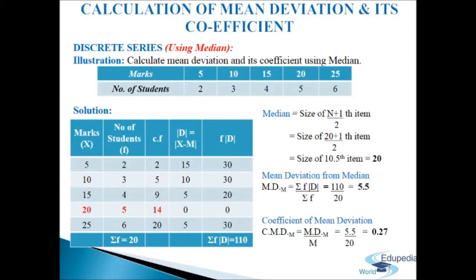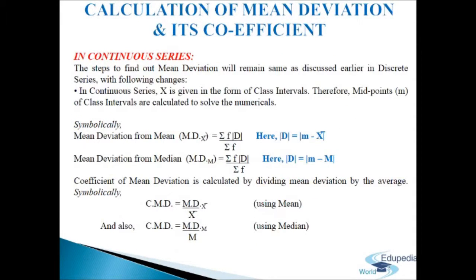This is how we calculate mean deviation and its coefficient in discrete series using median. Now we come to calculation of mean deviation and its coefficient in continuous series. The steps remain the same as discussed for discrete series, with the following change: in continuous series, x is given as class intervals, so midpoints (denoted by m) of class intervals are calculated.